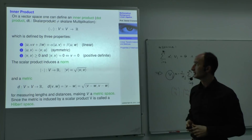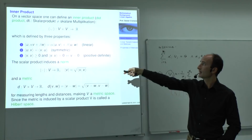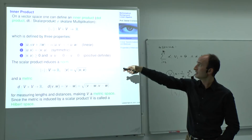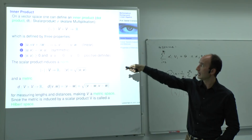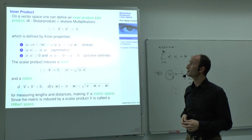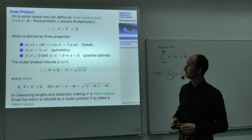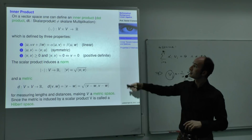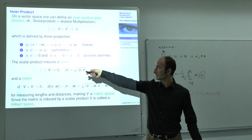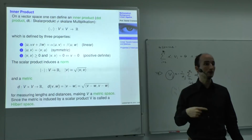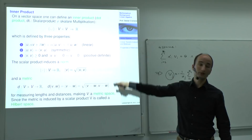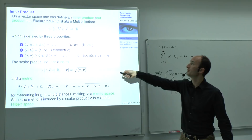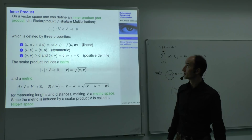The inner product has three properties. First, it is linear: the inner product of u with (alpha*v + beta*w) equals alpha*(u·v) + beta*(u·w). Second, it has to be symmetric: u·v equals v·u. Third, it has to be positive definite: v·v must be non-negative — zero or greater than zero — and in fact equals zero only for the zero vector. If these three properties hold, then the product is called an inner product or dot product.